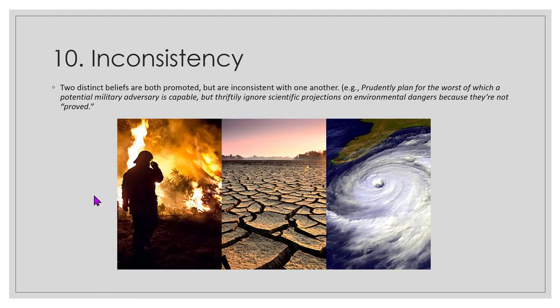You also have to look for inconsistency — two distinct beliefs that are promoted but are inconsistent with one another. For example, as American society, we typically will prudently plan for the worst that a potential military adversary is capable of, but we thriftily ignore scientific projections on the environmental dangers of climate change because they're not proved. We are very inconsistent in the way we deal with problems.